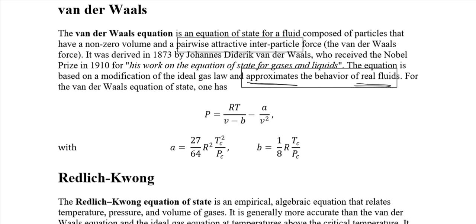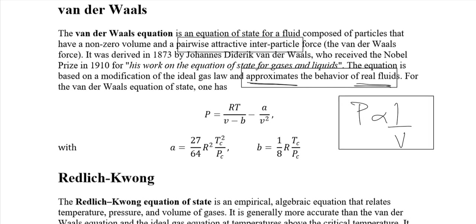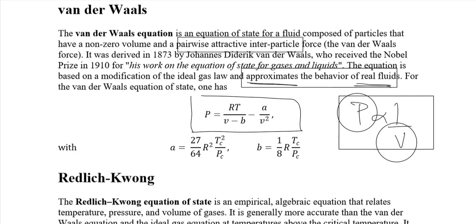When we are talking about pairwise attraction or repulsion forces between particles, we are deviating from Boyle's law, meaning pressure will not be proportional to 1/V. The Van der Waals equation is: P = RT/(V − b) − a/V², where a and b are variables that need to be calculated.